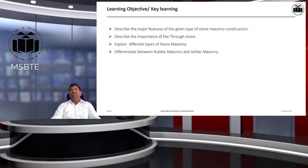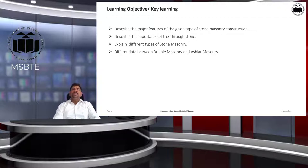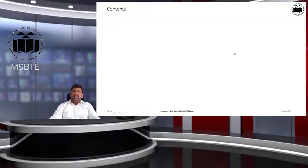The learning objectives are: describe the major features of the given type of stone masonry construction; describe the importance of the through stone; explain different types of stone masonry; and differentiate between rubble masonry and ashlar masonry. These are the four major things you are going to learn in this upcoming lecture.